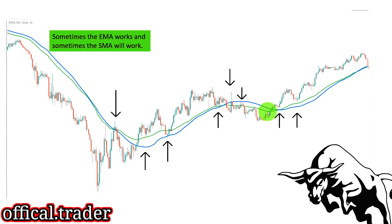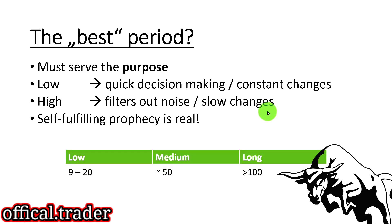Learn to cut losses — this is really, really important. So what is the best period? The period you choose for your trading must serve the purpose for what you intend to use it. Generally, when it comes to moving average settings, we as traders distinguish between three different categories: low, medium, and long term.